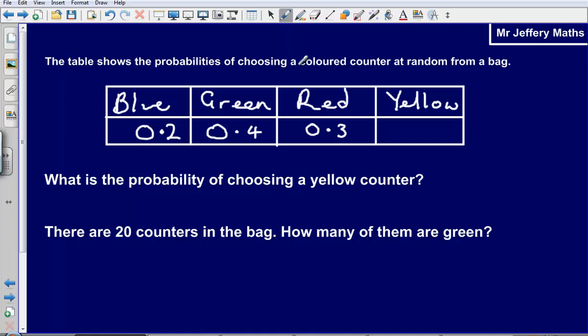The table shows the probability of choosing a coloured counter at random from a bag. What is the probability of choosing a yellow counter?